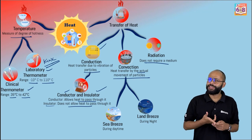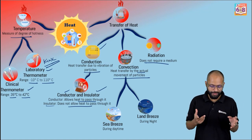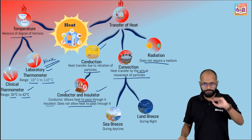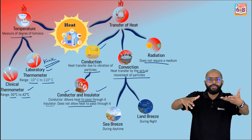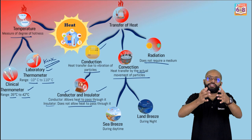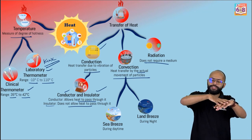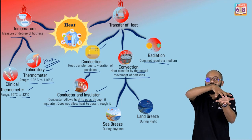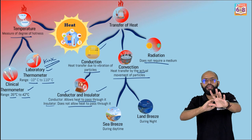Sea breeze happens during the daytime. Land and sea receive equal sunlight, but land heats up faster compared to the sea. So during daytime, land is hotter and sea is cooler. The air above land gets hot, becomes less dense, and rises up. Cold air from the sea then comes towards the land — this is the sea breeze. The hot air above land rises, moves over the sea, and cools down, forming a convection current.